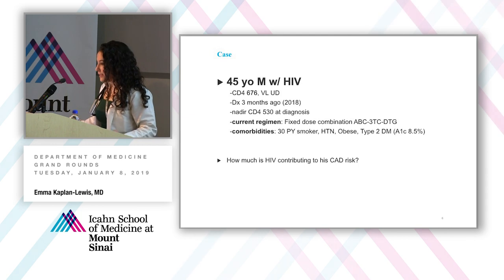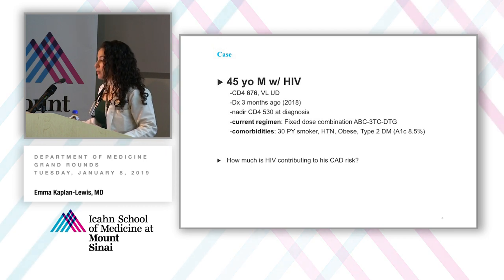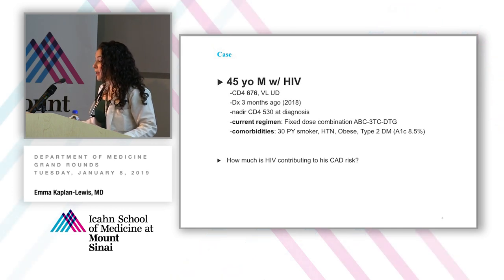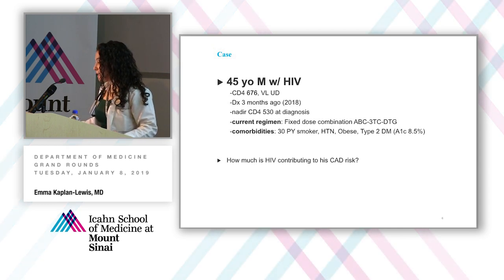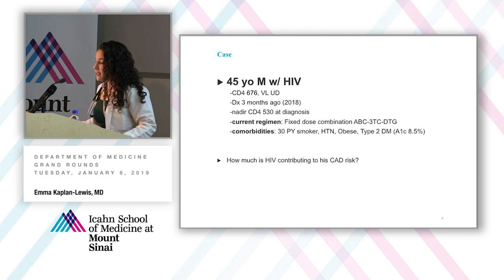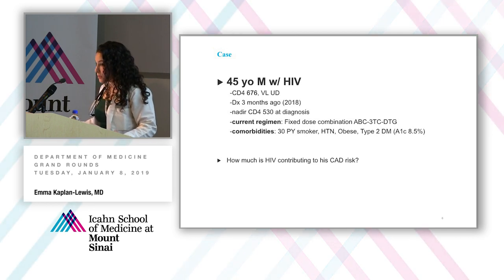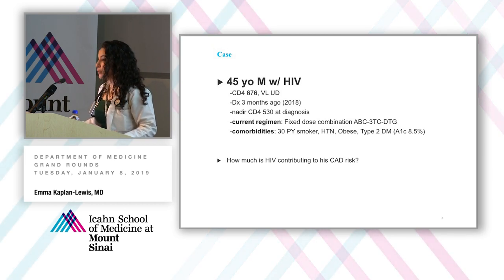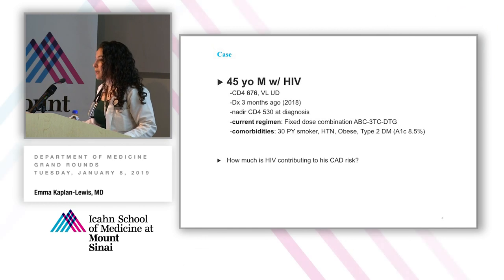In contrast, take this second case: a 45-year-old gentleman with HIV, CD4 of 676, undetectable viral load, diagnosed three months ago and immediately started on treatment. His nadir CD4 is above 500 on the same regimen. He also has other cardiac risk factors — active smoking, hypertension, type 2 diabetes, obesity. So how much is HIV contributing to this person's coronary risk? The main differences between these two cases are when they were diagnosed, when treatment was started, and what medications they were exposed to — the newer versus the older HIV regimen. We have very good evidence from large randomized controlled trials that we start people on treatment right away.